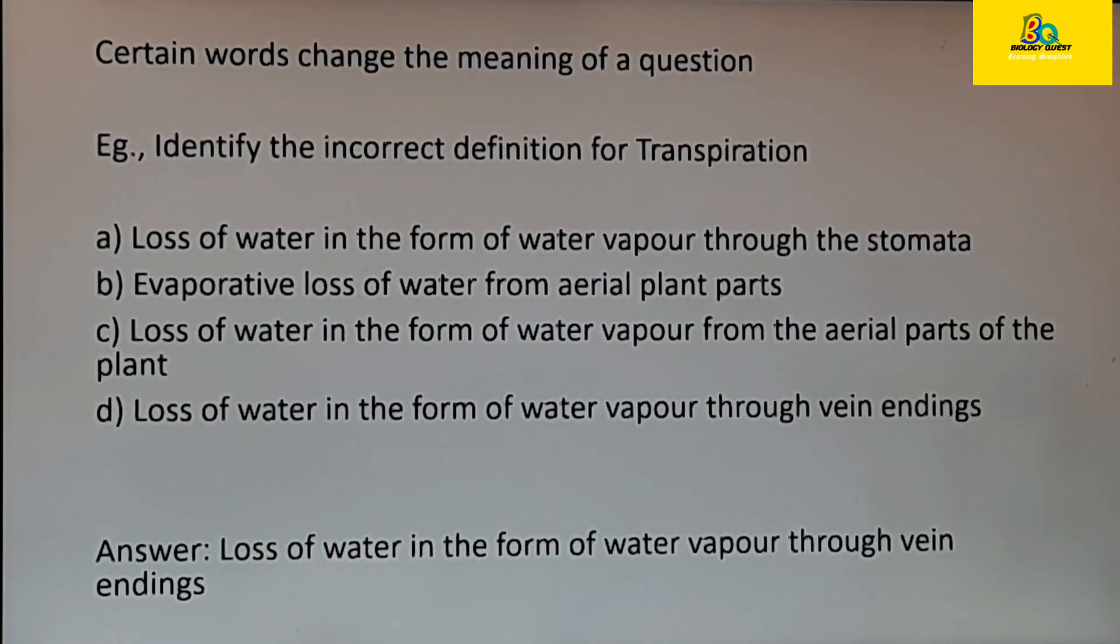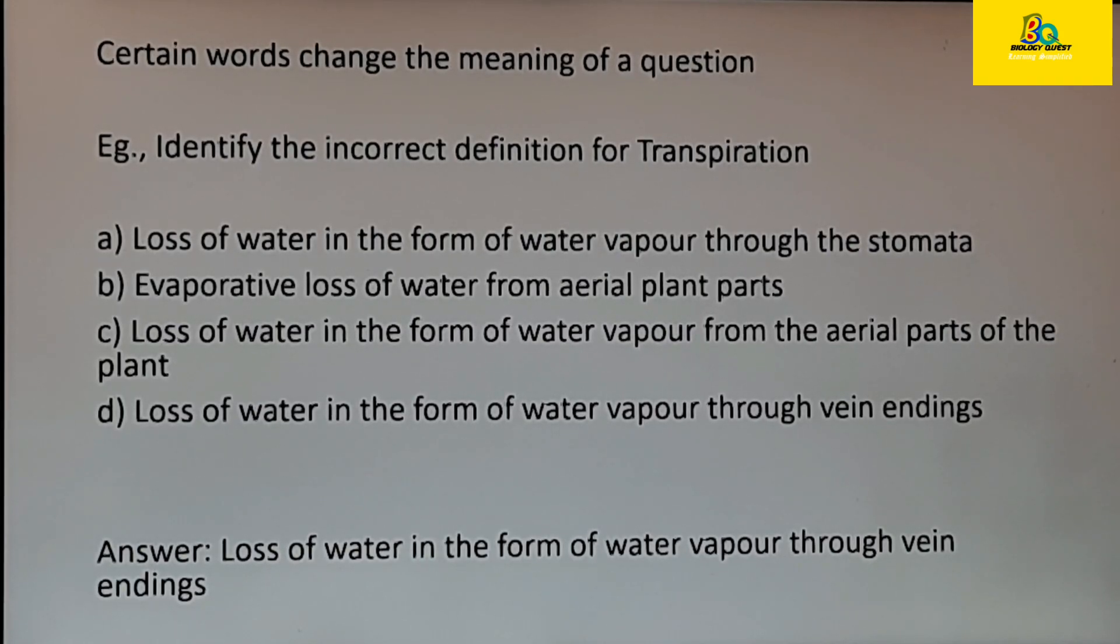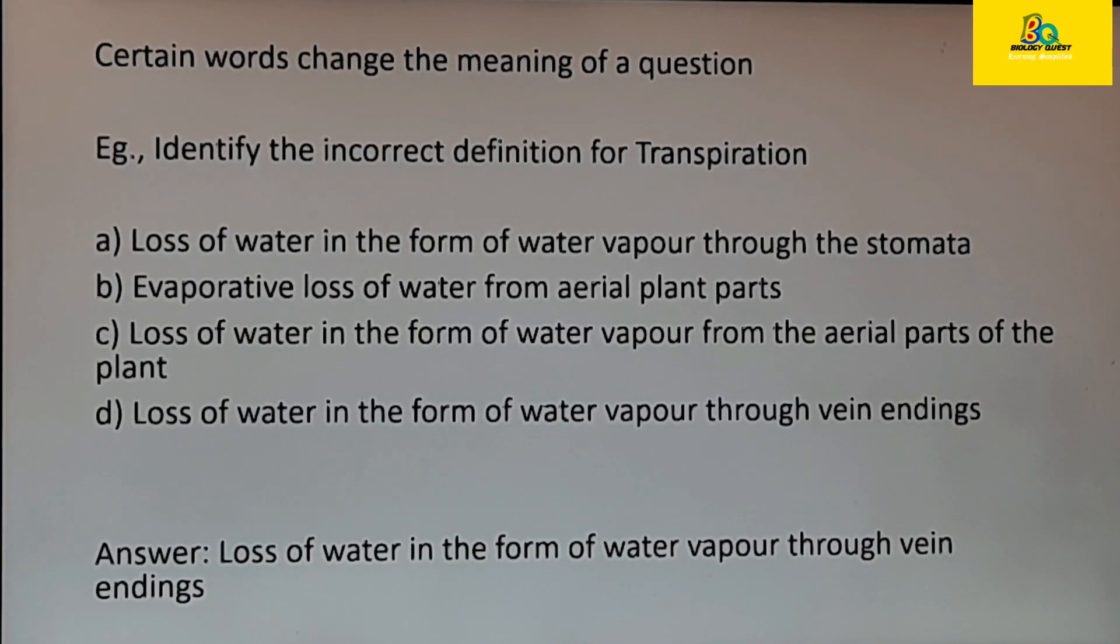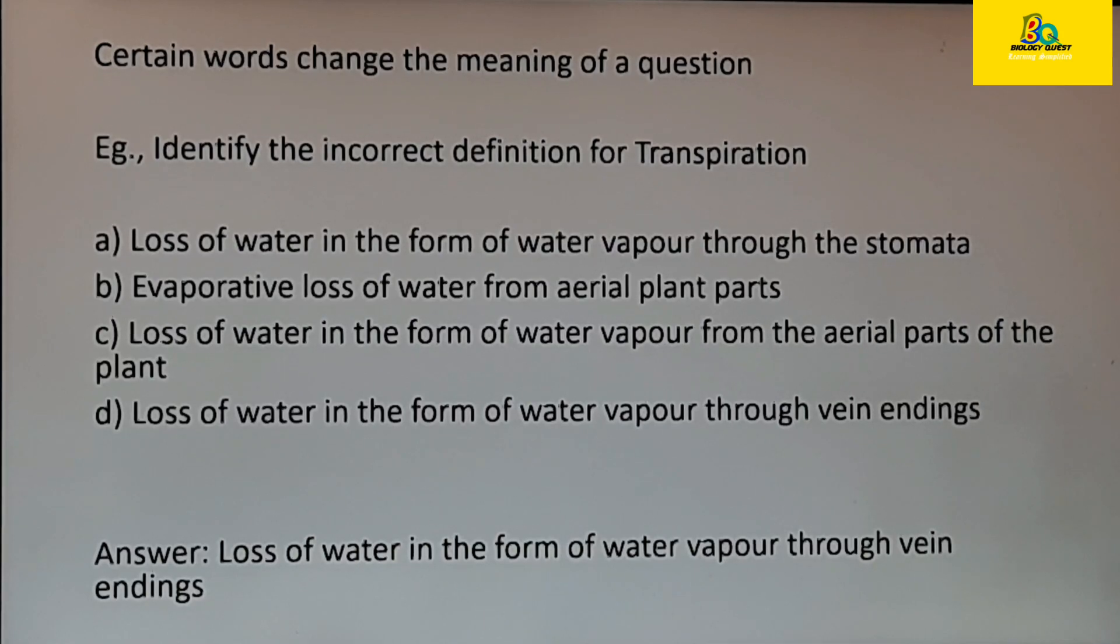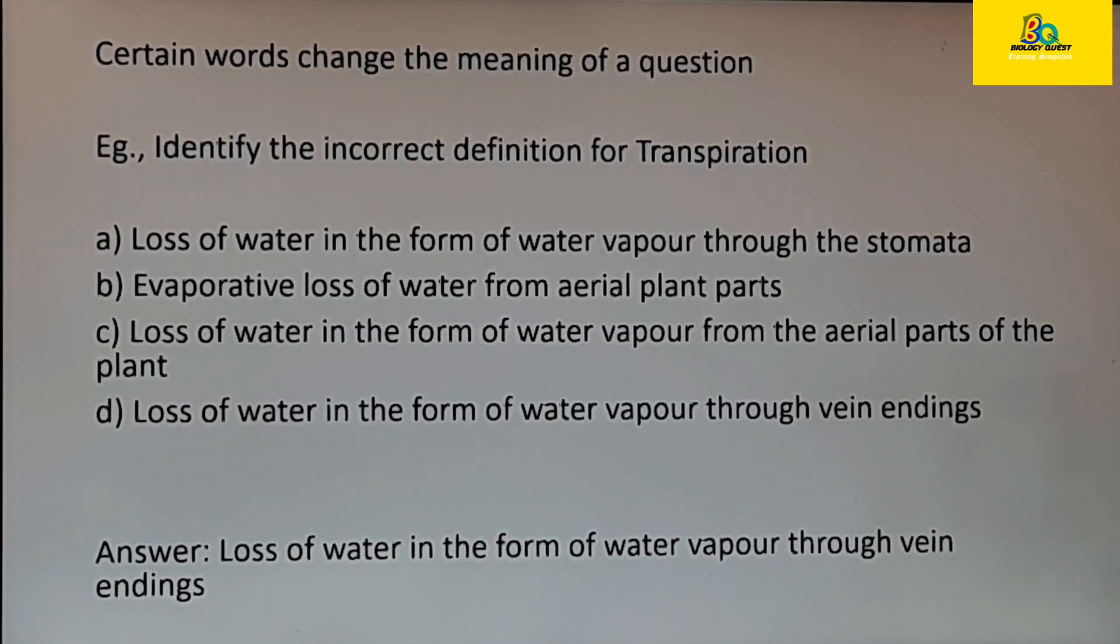I shall show you an example here. Here the question is identify the incorrect definition for transpiration. You just saw the words definition and transpiration, you move on to the options, look at the first option. You have read the first option and you have identified it as the correct option and you have written it as the correct option. But here the question is identify the incorrect definition for transpiration. You have just left out those two letters 'in' in front of 'correct' and you have got your answer wrong. So make sure to read the questions twice or thrice. This will prevent you from making such mistakes.